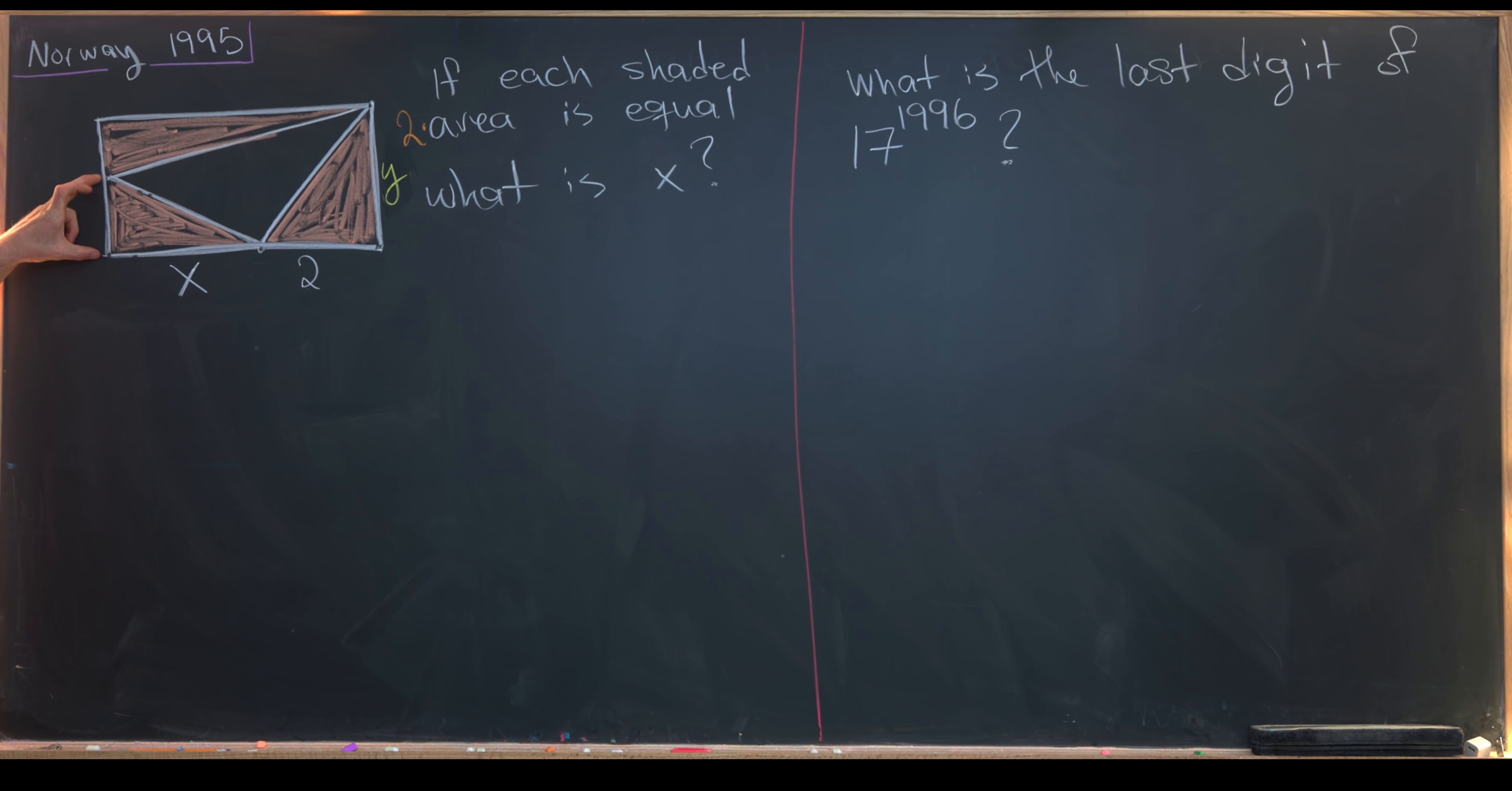But that means we can find this line segment length here, in other words, the height of this bottom left triangle. We know that this number right here times x must be equal to 2y. That means that this length right here must be 2y over x. Notice, 2y over x times x is 2y.